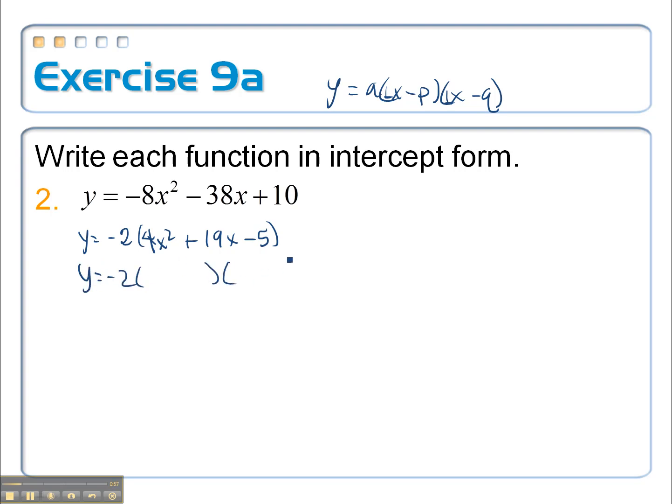So negative 2, open the parentheses twice. This times this has to be 4x squared. When I try 4x and x, that times that has to equal negative 5. So why don't I try a 5 and a 1, and I check my rainbow products here.